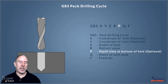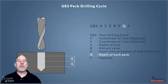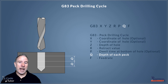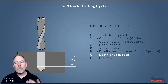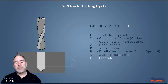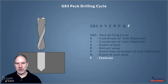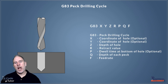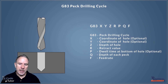The P dwell works the same as the G04. The Q value is the depth of each peck — say we want to peck three millimeters, then retract out and start the next peck; we set that with a Q value. And finally, we need to add a feed rate to our drill using an F word. That's a quick overview of the peck drilling cycle line of code we would write for G-Code.